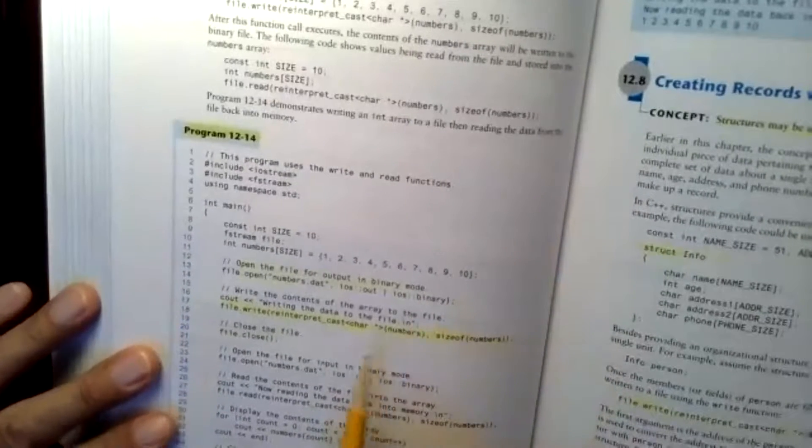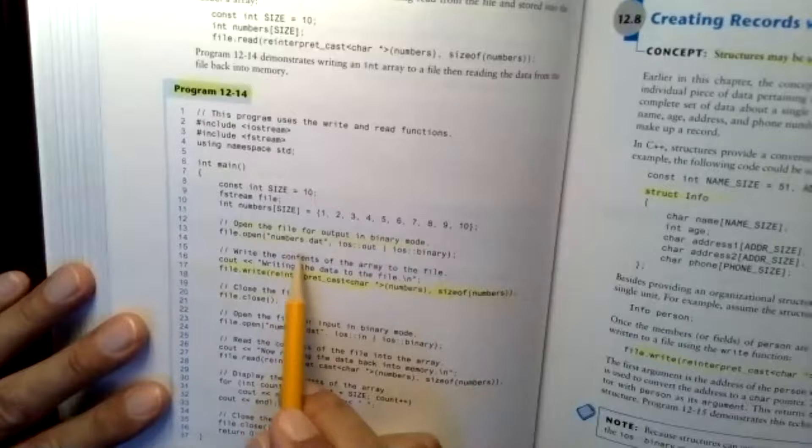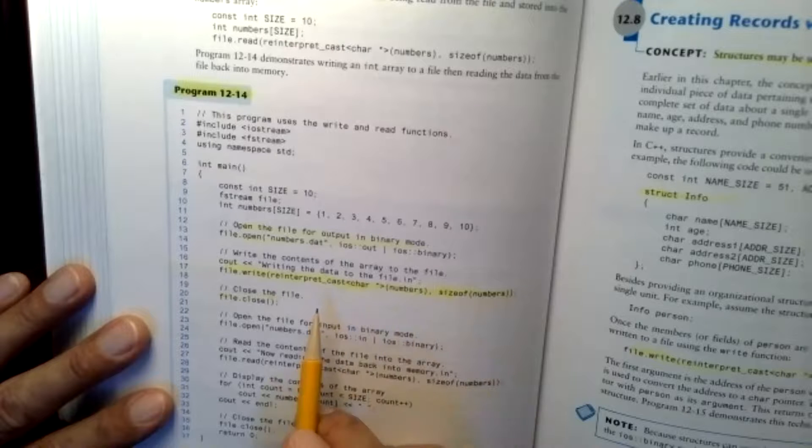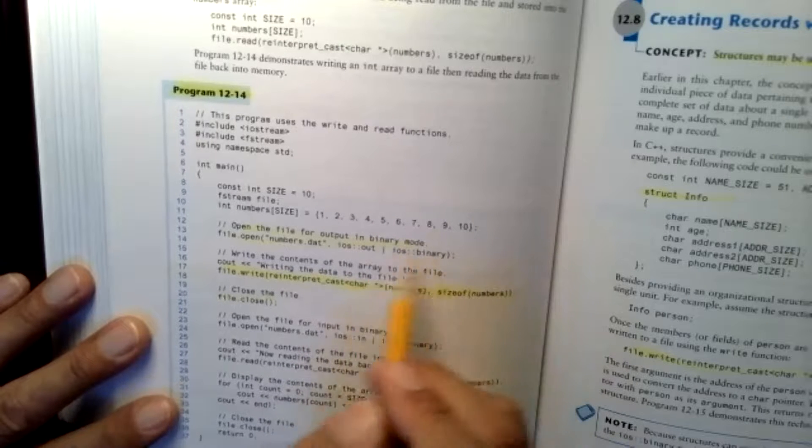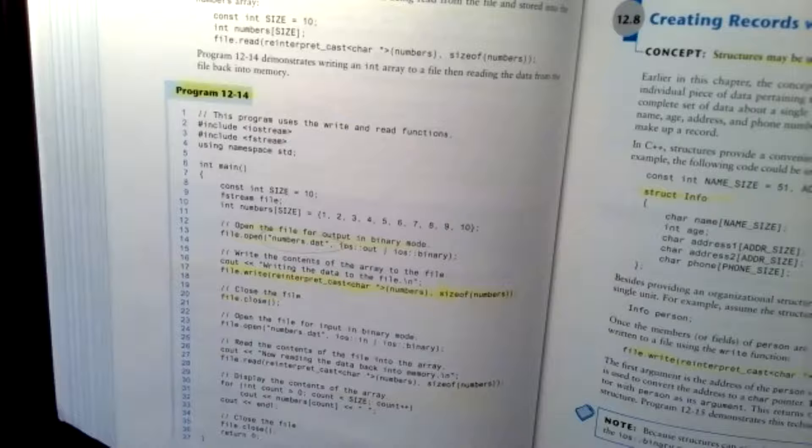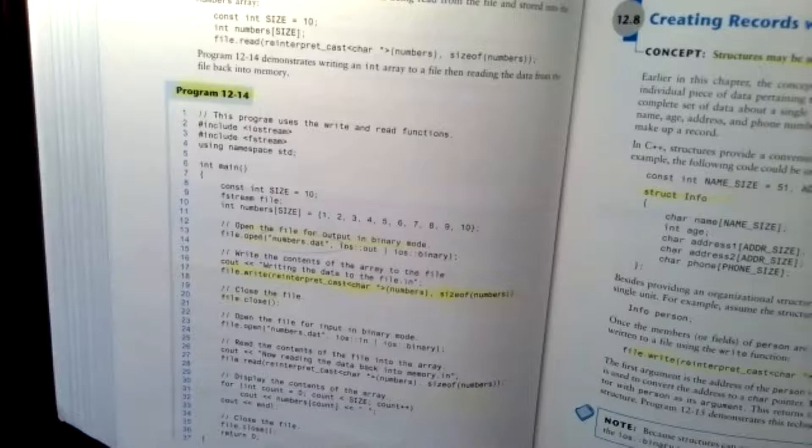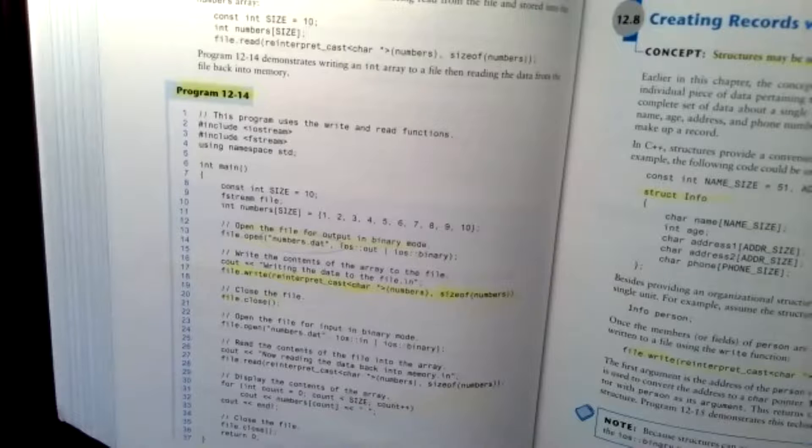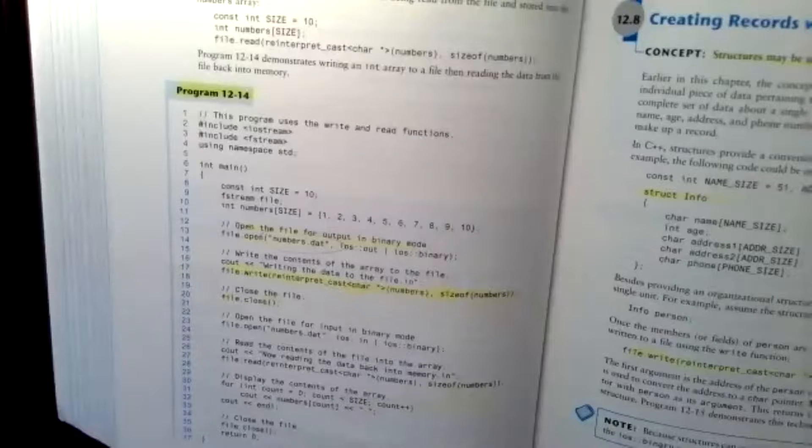This was code listing 214 where again you have another file from the code listings. This time it's called numbers.dat. You get it ready for output binary. You're going to write in everything from this array and close it. Then you're going to read it all back in. My question is, what does numbers.dat look like?